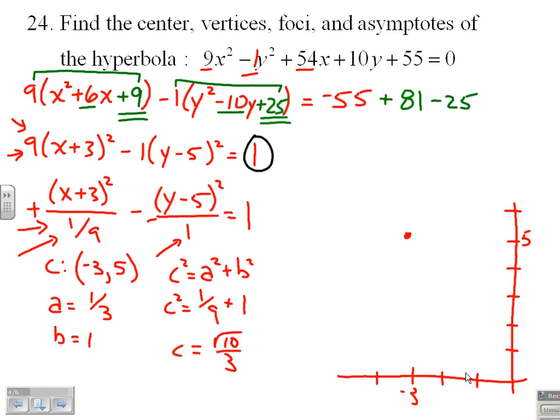So from my center to get to my vertices, a is 1/3. That is underneath the x, which means in an x direction, right and left, I need to move a third. Just moving a third, not very far at all. My 1 underneath the y². b is 1. I'm going to move 1 in a y direction, up, down. Up 1. Down 1.